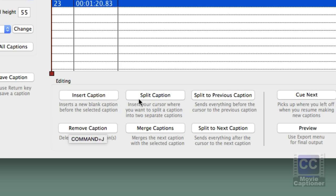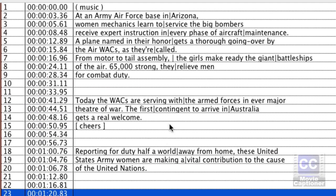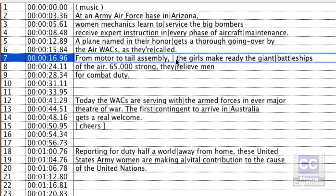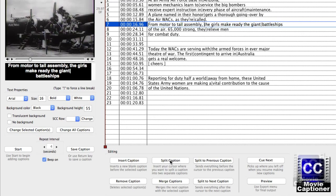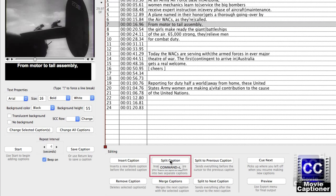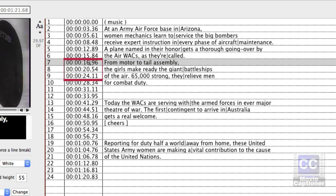You can also split a caption. If you have a long caption and want to split it into two, first remove any line break you won't need. Then put the cursor where you want to split it and click the Split Caption button. It will split the caption into two captions and divide the time difference between them.